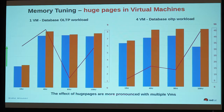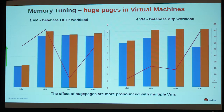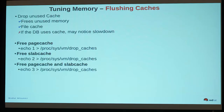Same thing with VMs: when I use huge pages inside the virtual machine too, I see improvement jumping from 1% to 8% with a single VM, but with four VMs I see dramatic improvement in performance. Basically: use huge pages for your databases.